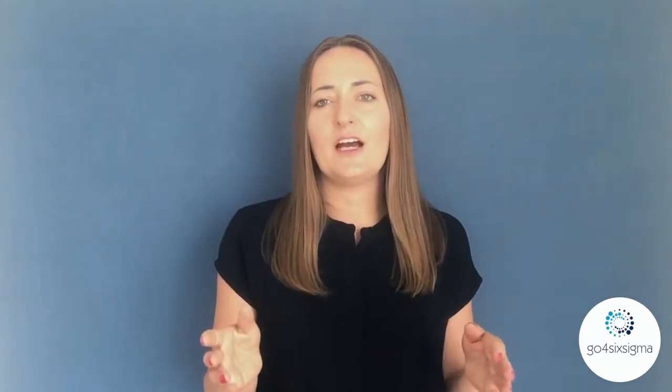The next step is to select all the data and choose the average function, to find what is the average value. Going back to the pizza delivery time example: minimum 15 minutes, maximum two hours, but the average is, say, 20 minutes. So the customer is waiting on average 20 minutes. You might ask why it was two hours — you will investigate that situation later in the analyze phase to improve the pizza delivery time.